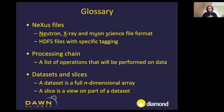A quick glossary of terms. Diamond uses the Nexus file format, based on an HDF5 container with agreed data tagging primarily for the neutron, X-ray, and muon science community, though it is extensible. A processing chain is a list of operations performed on a dataset. A dataset is a full n-dimensional array, and a slice is a view on a part of that dataset.